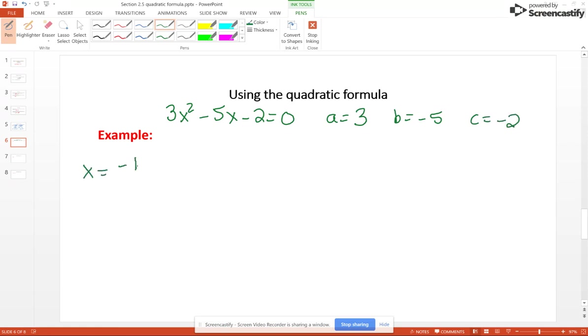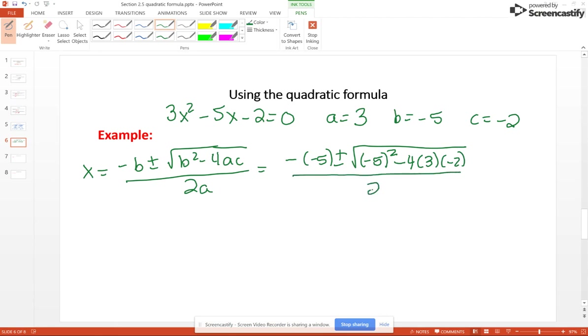Our a is 3, our coefficient of x is negative 5, and our constant is negative 2. So once again, plugging it into our quadratic formula, you will get negative negative 5 plus or minus square root - now that negative is also being squared, so put the negative 5 inside a parenthesis with the square on the outside - minus 4 times 3 times negative 2, and this whole thing is being held up by the 2 times 3.